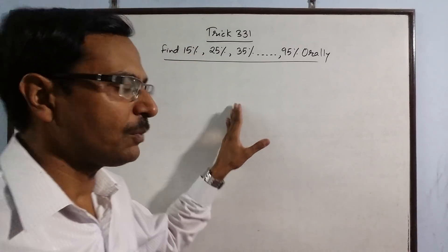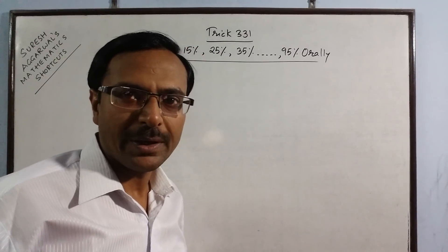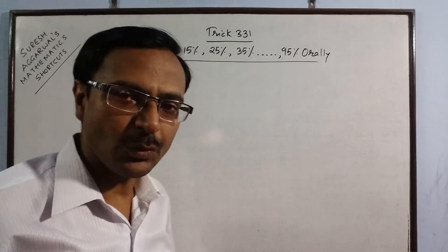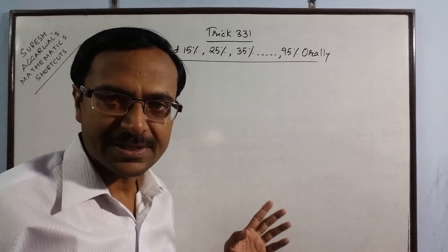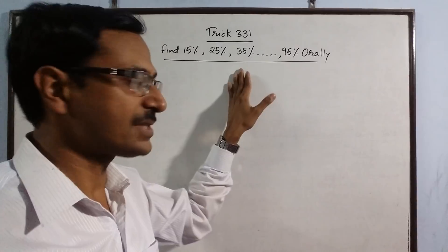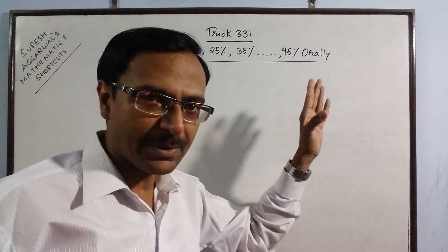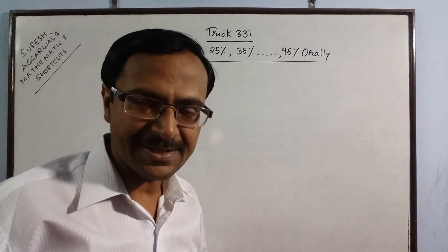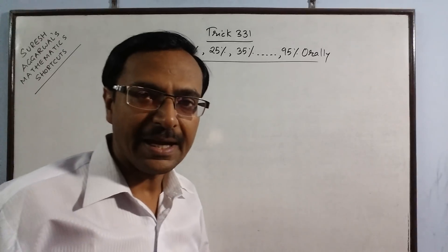In trick number 331, I am going to tell you a method through which you will be able to find 15%, 25%, 35% up to 95% orally. Yes, these are the percentages ending with 5.